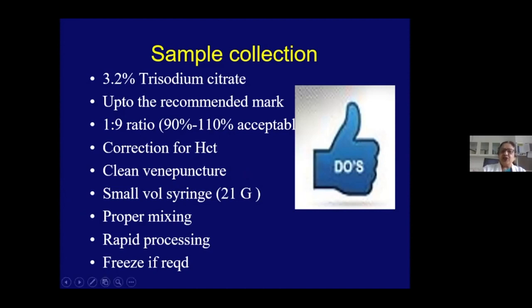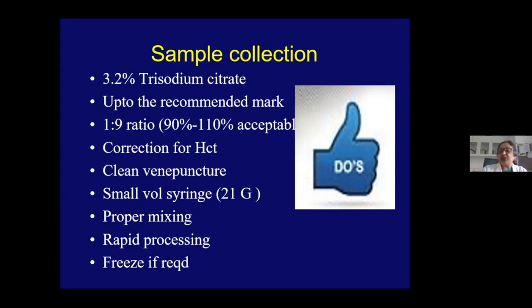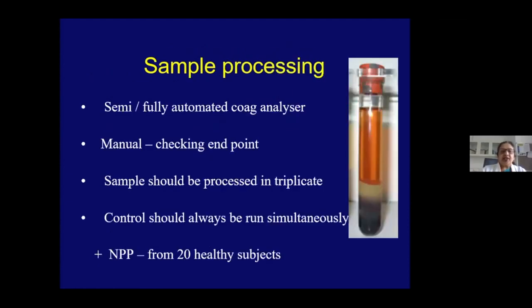There should be a clean venipuncture; multiple venipunctures introduce tissue fluid and lead to erroneous results. Once collected, the sample should be properly mixed by inversion — not shaking — to avoid froth formation, which activates blood and leads to fallacious in vitro results. If transport is needed, the sample should be frozen rapidly so that coagulation factors do not get spoiled.